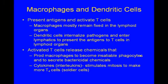Activated T cells release chemicals that prod macrophages to become insatiable phagocytes and release bactericidal chemicals. They also release cytokines, which are types of interleukins. These stimulate mitosis to make more T4 cells, which act like soldier cells.